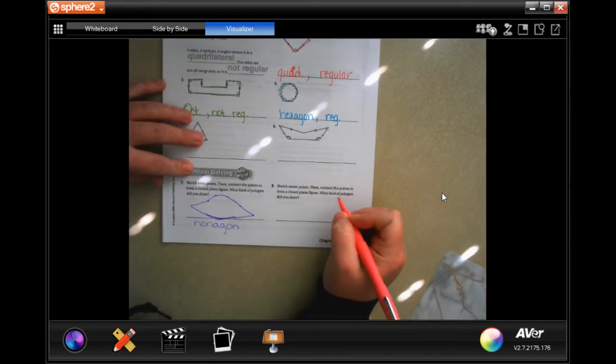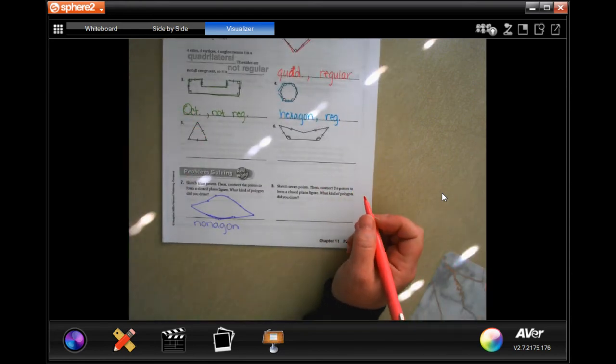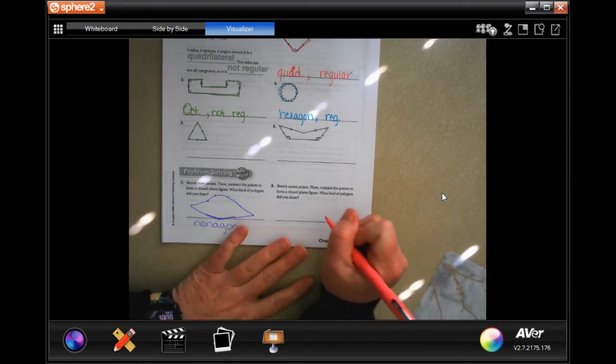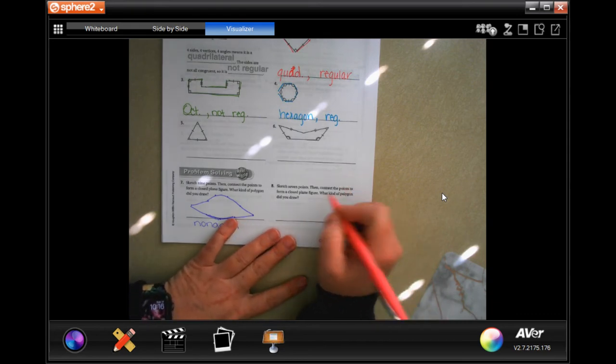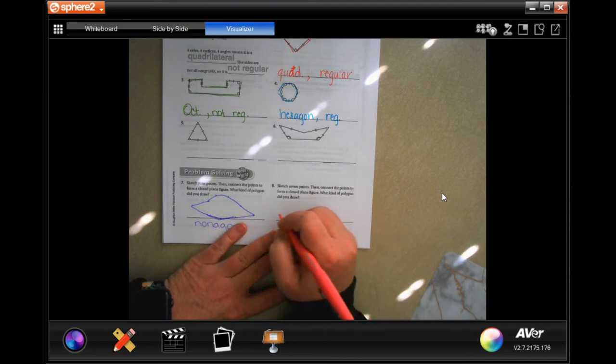Sketch seven points then connect the planes. Okay, go ahead and do that. But I'm just going to name the polygon - a seven sided is a heptagon.